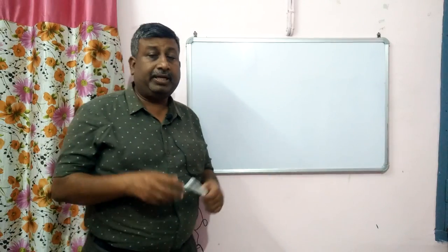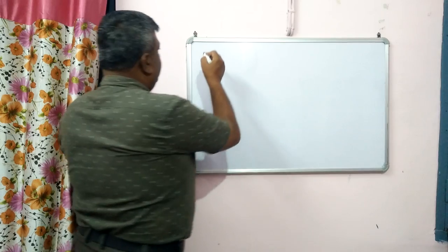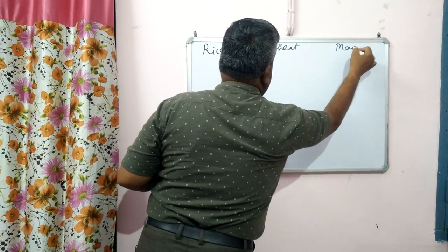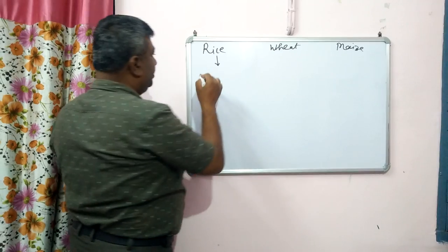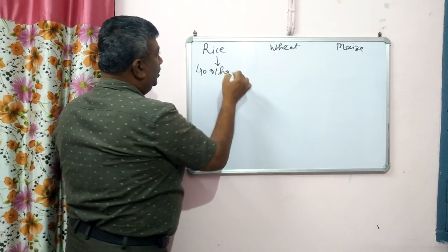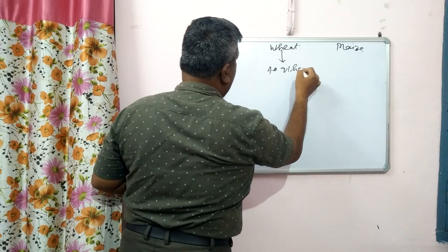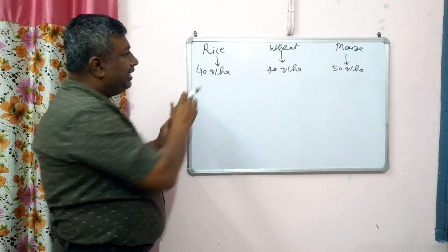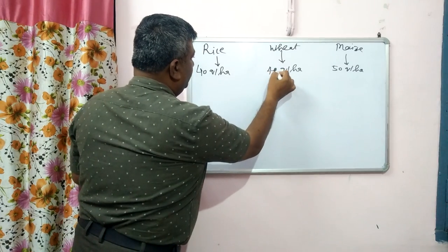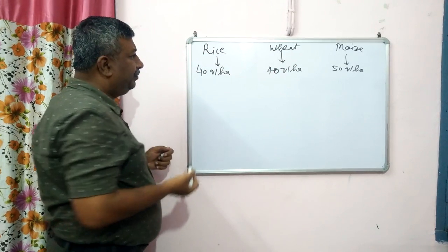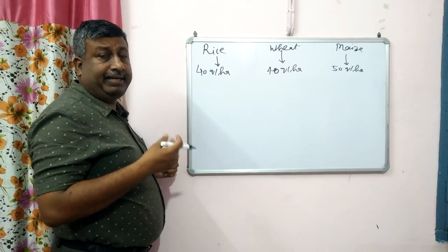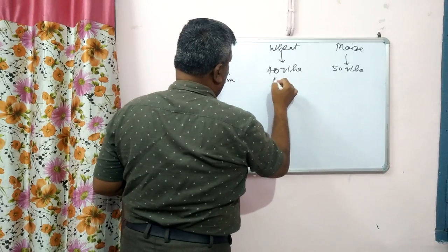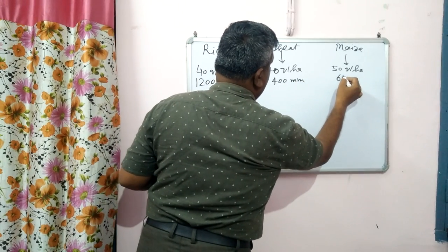First, we have to find out what is the yield level — how much yield is produced? Suppose it is 40 quintal per hectare for rice, about 40 quintal per hectare for wheat as well, and maize about 50 quintal per hectare. This is the average grain production. Another data required is the irrigation water requirement in mm — rice requires about 1,200 mm, wheat about 400 mm, and maize about 600 mm.